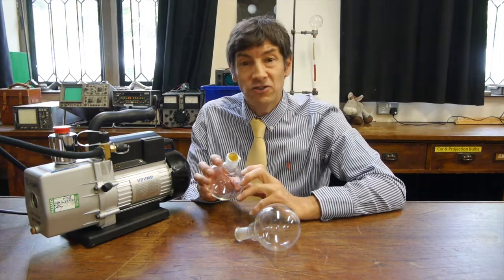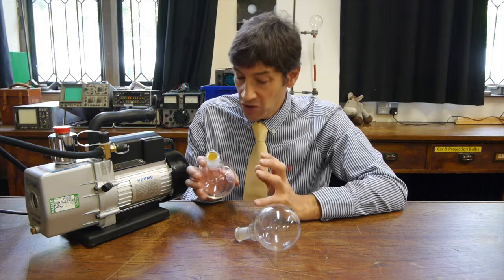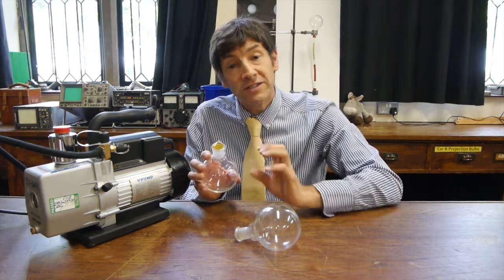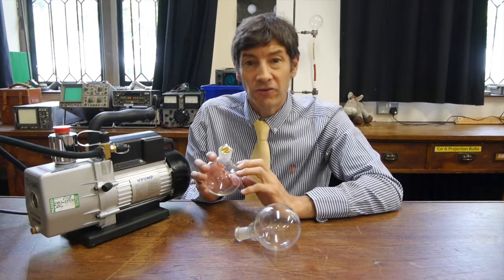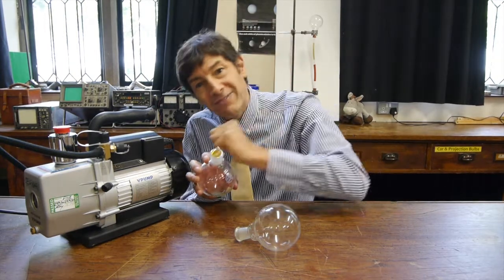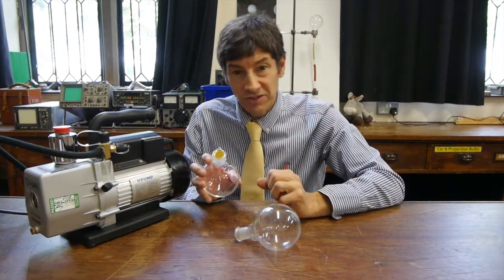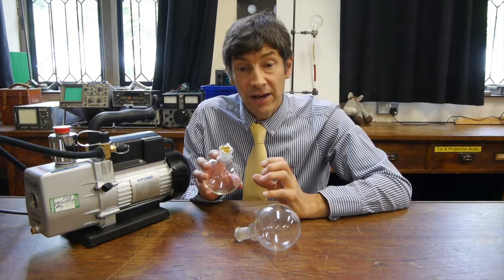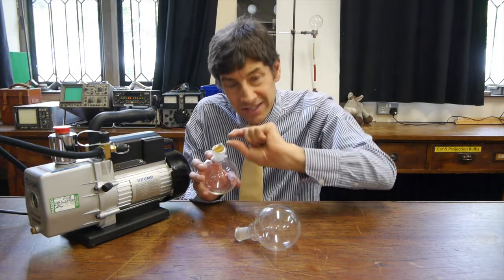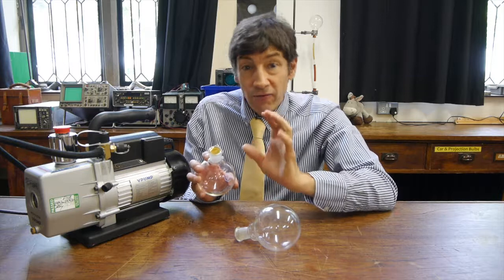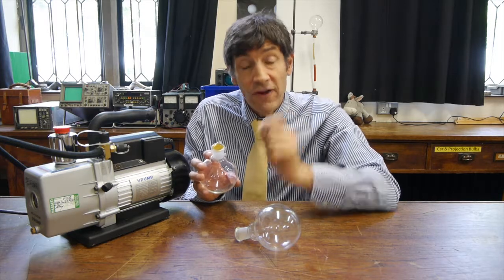So, why is diffusion such a slow process? Well, of course, the particles that are trying to diffuse are moving at around 500 metres per second. But they're having so many collisions in the gas that they're in that their actual distance that they move every second is really very small indeed.